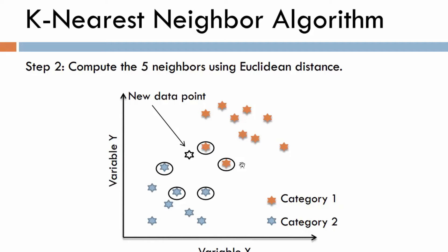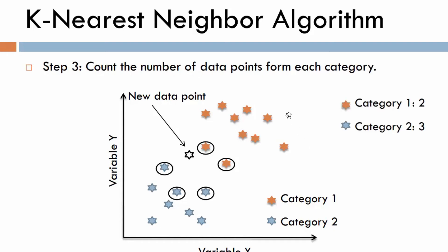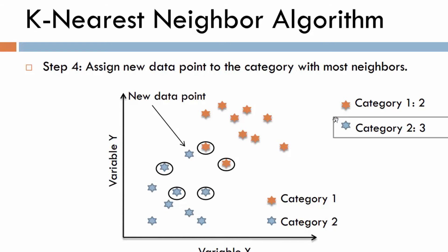Step three is to count the number of data points for each category. In this case, from the five neighbors inside the circle, two belong to category one and three belong to category two. Finally, step four is to assign the new data point to the category with the most neighbors, which in this case is category two. That was as simple as that — we have classified our new data point.